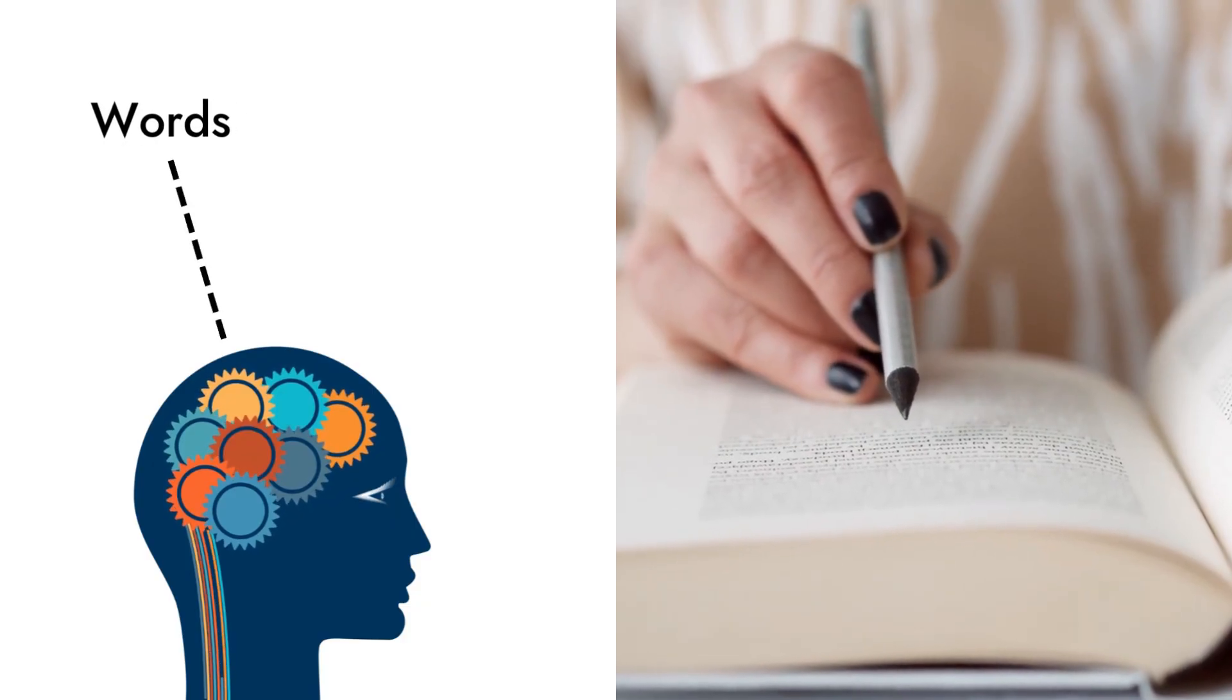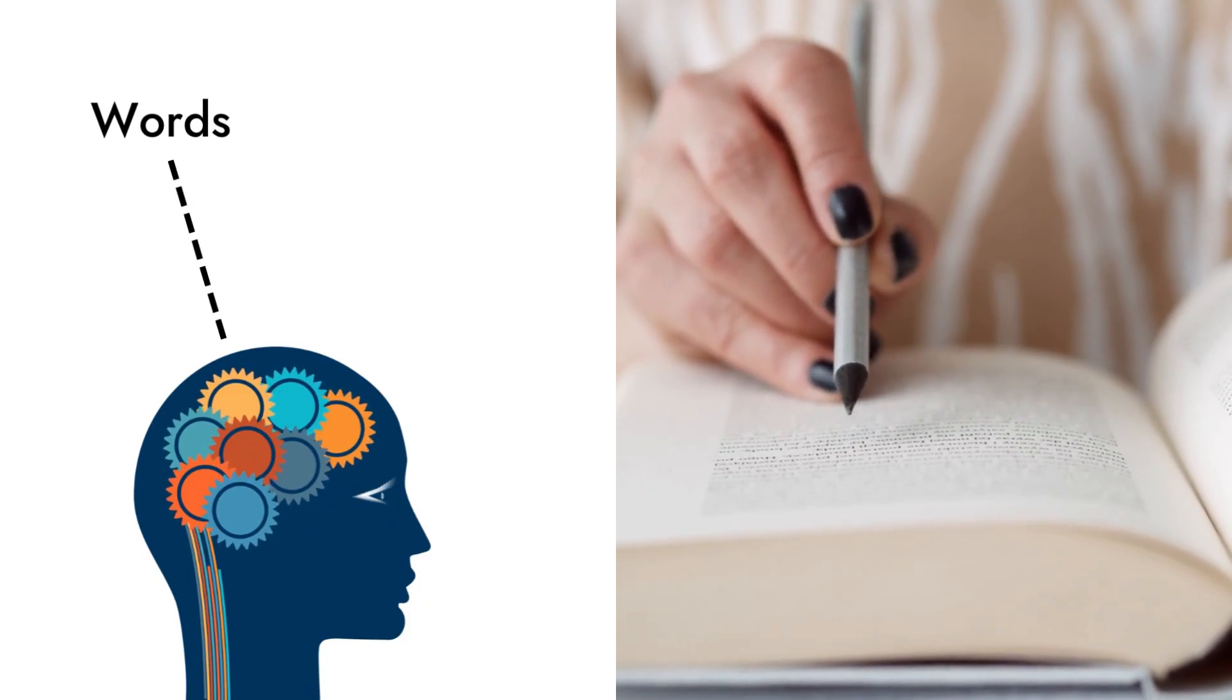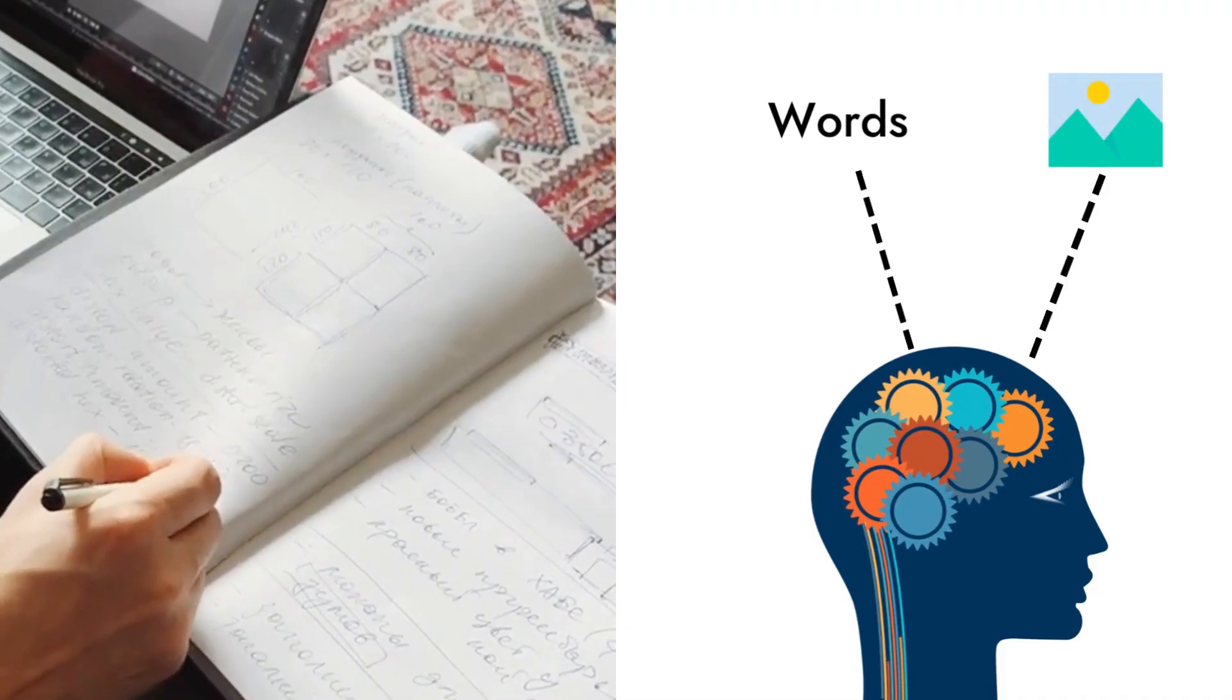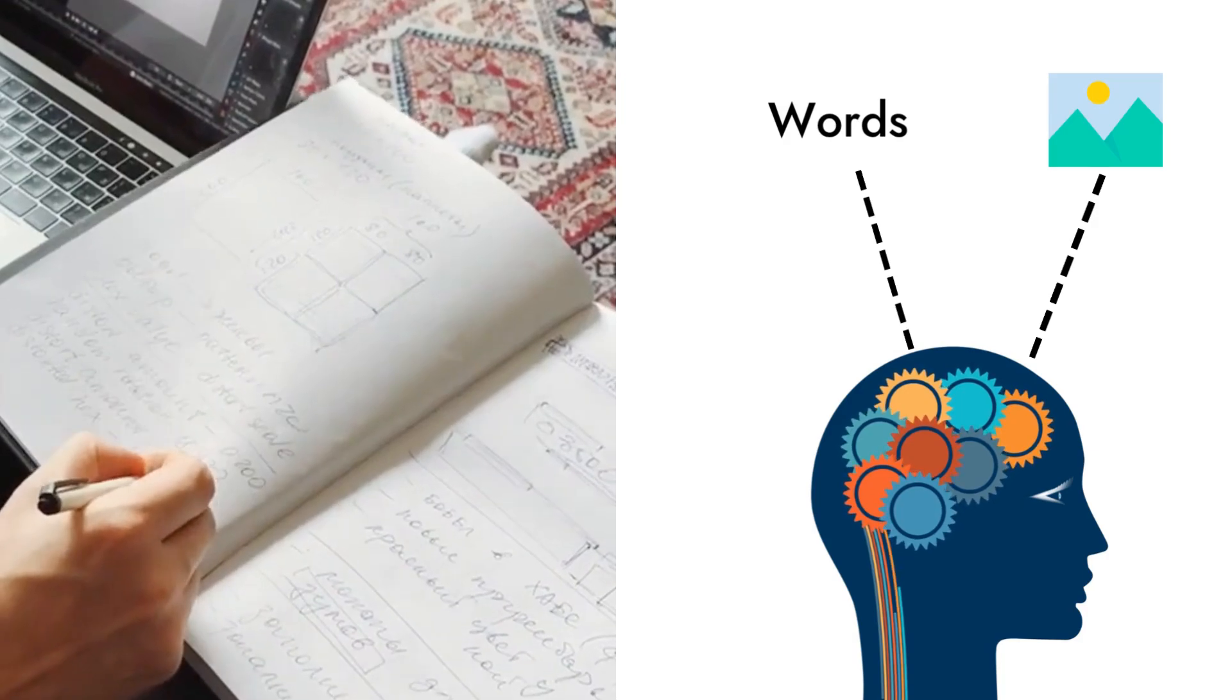When you only study with text, you're relying on one pathway. But when you combine words with visuals like diagrams, sketches, or charts, you activate both pathways.